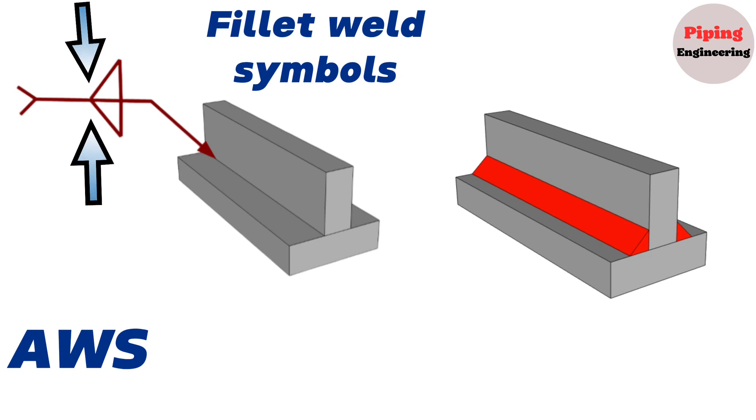When fillet welding symbols are showing on both sides of the reference line, it is called a double fillet weld and the weld is carried out on both sides of the joint.